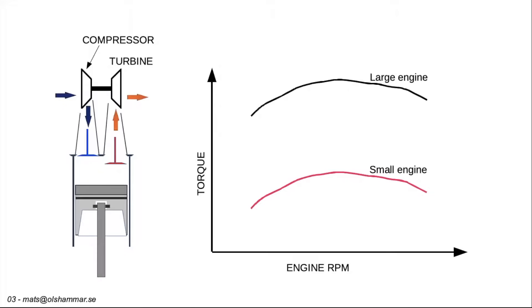The turbo consists of two parts. The turbine that is driven by the exhaust gas and the compressor that is driven by a shaft connected to the turbine.